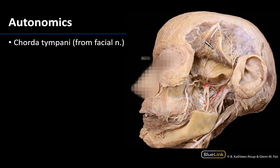The chorda tympani is entering into the infratemporal fossa via the petrotympanic fissure, and we remember that it's going to begin to travel with or hitchhike with that lingual nerve. And the lingual nerve, remember, is always going to be the more anteriorly placed. This one is going to be the IAN over here.